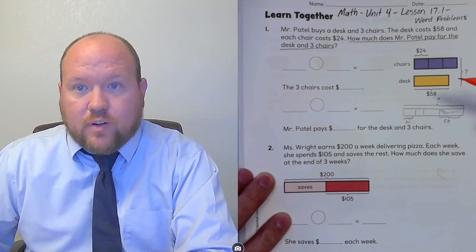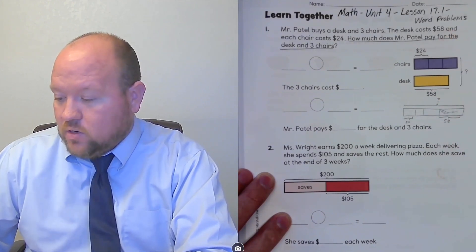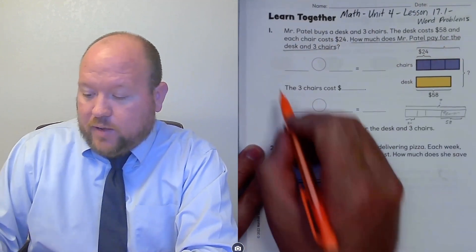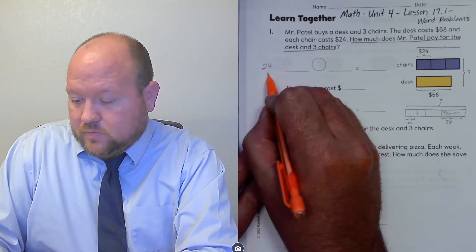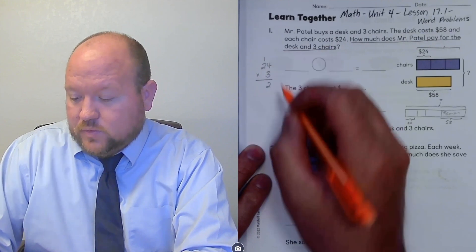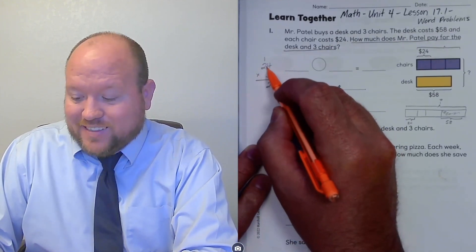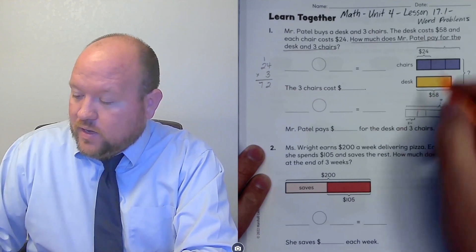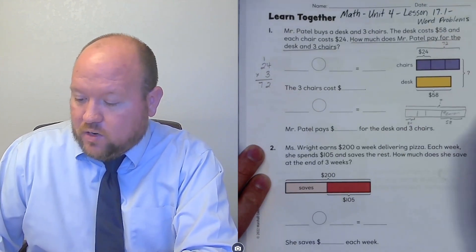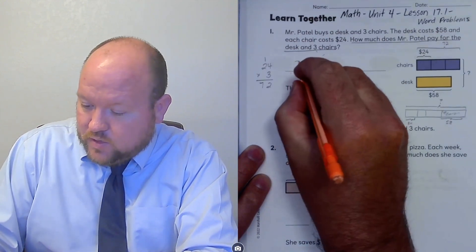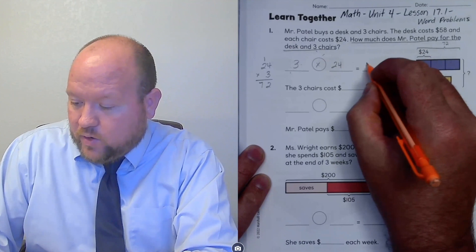In order to solve this first, I need to figure out how much we spent on chairs. We have three groups of 24, so we're going to do three times 24. Three times four is 12, three times two is six — remember this is 60 because it's a 20 — we add the 10 up here, putting seven in the tens place. So we've spent $72 on chairs. The problem wanted us to do three times 24, and that equals 72.